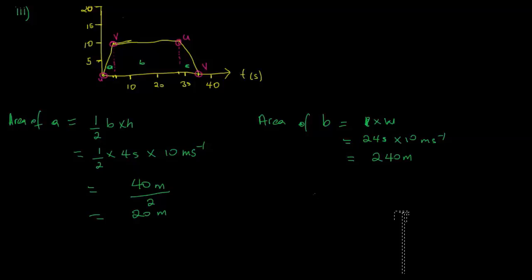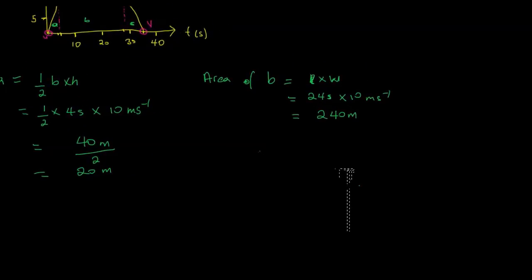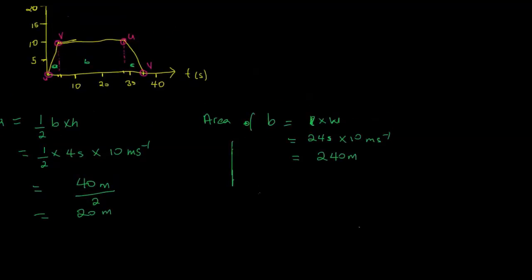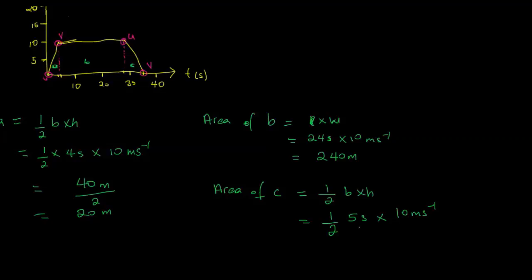Finally, we find the area of part C. Since it is again a triangle, area equals half times base times height. The base is 5 seconds and the height is 10 meters per second. That works out to 50 divided by 2, which is 25 meters.